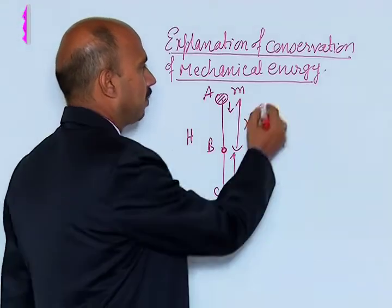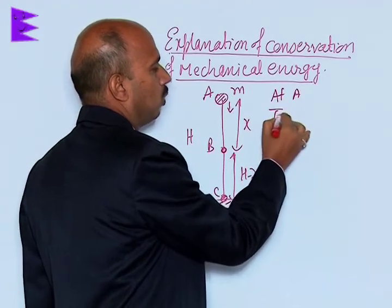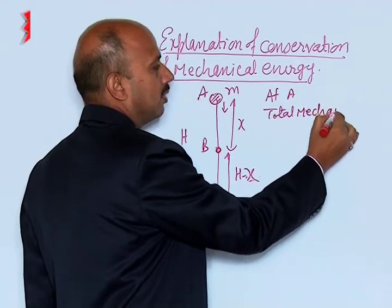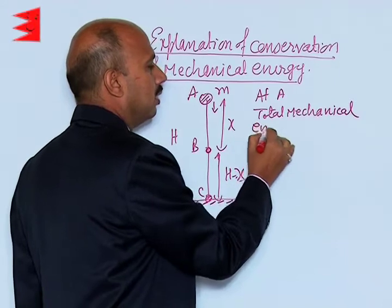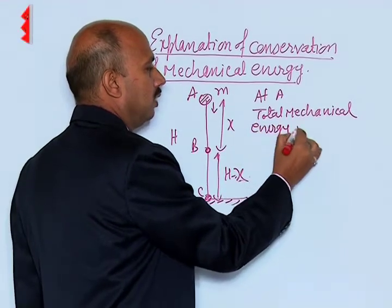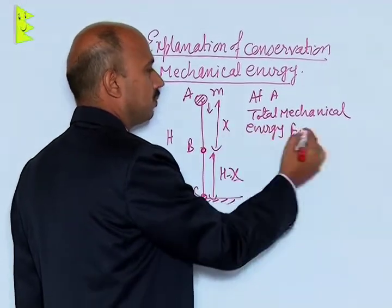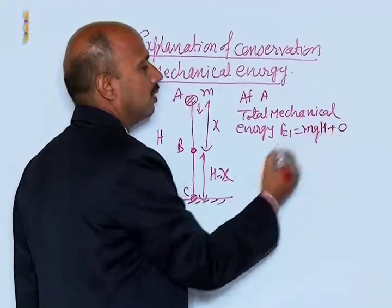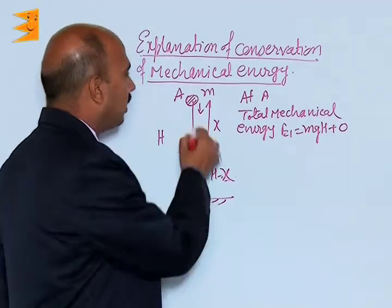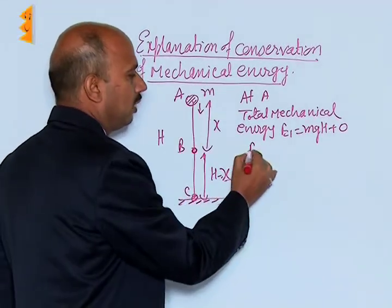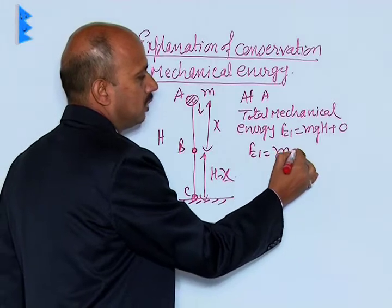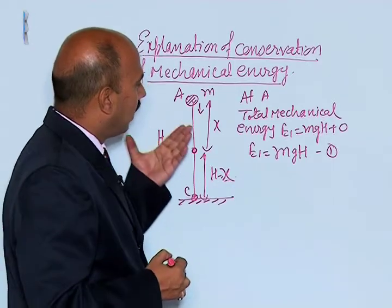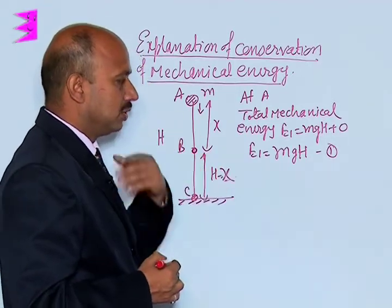Let us first take point A. At A, the total mechanical energy E1 is equal to potential energy plus kinetic energy. Potential energy is mgh and kinetic energy is 0, because at height h the body is at rest. So E1 equals mgh. Total energy at A is mgh.